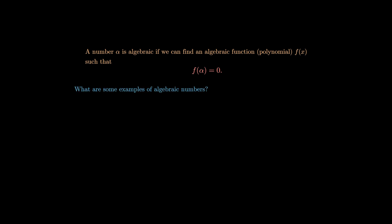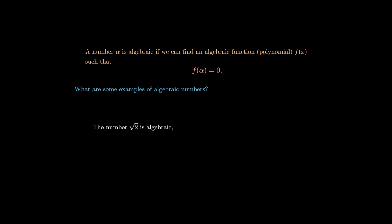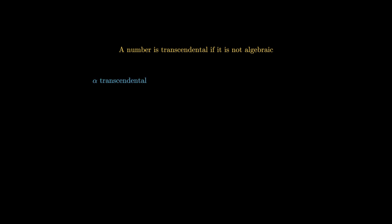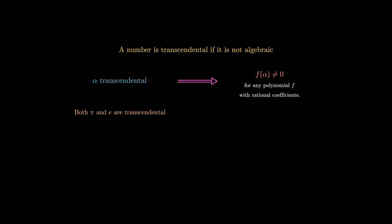Let's think of some examples of algebraic numbers. Any rational number — for example, 1/3 — is certainly algebraic, since we can just take the polynomial x minus 1/3. The number √2 is also algebraic, since we can take the polynomial x squared minus 2. A number is said to be transcendental if it is not algebraic — in other words, if alpha is transcendental, then alpha is not the root of any polynomial with rational coefficients. As alluded to in the introduction, both pi and Euler's number are transcendental: it's not possible to find a polynomial with rational coefficients such that f(pi) = 0 or f(e) = 0.